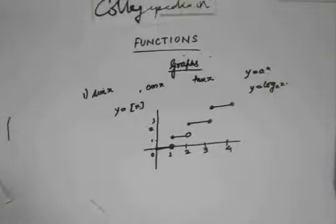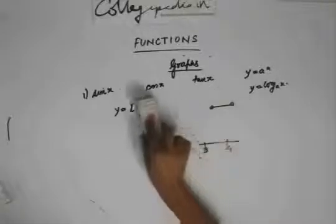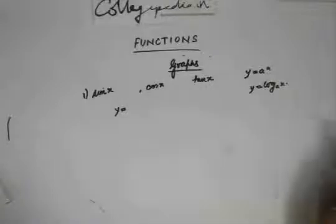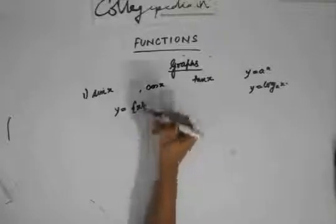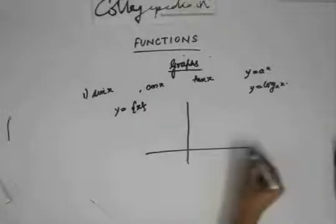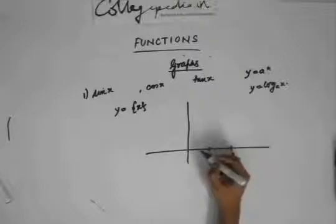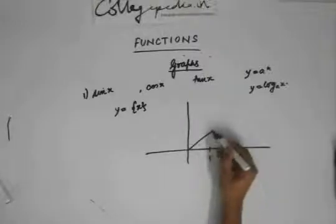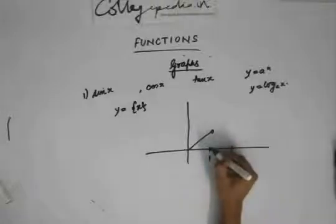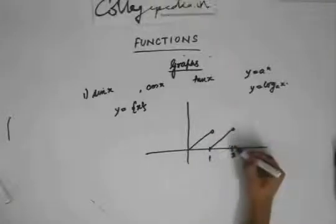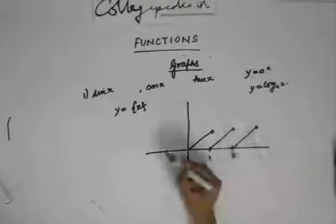Similar to the box function, we have something called the fractional part function, which we've discussed before. Now let's see how its graph looks. For y equal to the fractional part function, if I take any number between 0 and 1, the fractional part equals the fraction itself. The graph goes like this, then repeats again and again — it continues like this.